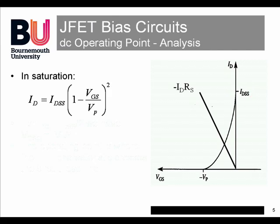Ideally, we would like the operating point bias to be at half the saturation current, IDSS over 2, so it is halfway between zero and maximum, and the output has the best chance to swing around without hitting the power and earth rails. Owing to the inverse square law curve, halving the maximum drain current puts the gate voltage at around a quarter of the pinch-off voltage, minus VP upon 4.